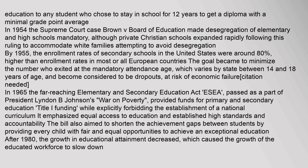In 1954, the Supreme Court case Brown v. Board of Education made desegregation of elementary and high schools mandatory, although private Christian schools expanded rapidly following this ruling to accommodate white families attempting to avoid desegregation. By 1955, the enrollment rates of secondary schools in the United States were around 80%, higher than enrollment rates in most or all European countries. The goal became to minimize the number who exited at the mandatory attendance age, which varies by state between 14 and 18 years of age, and became considered to be dropouts at risk of economic failure.